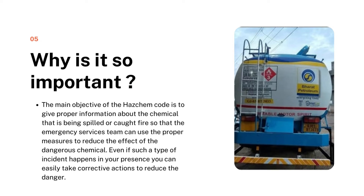The main objective of HAZCHEM code is to give proper information about the chemical that is being spilled or caught on fire, so that the emergency services team can use proper measures to reduce the effect of these dangerous chemicals. Even if such a type of incident happens in your presence, you can easily take corrective action to reduce the danger.